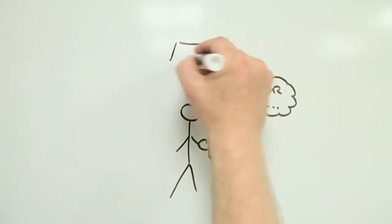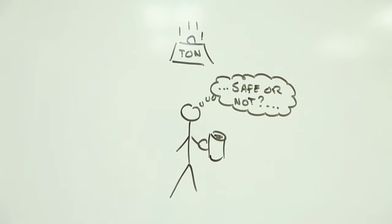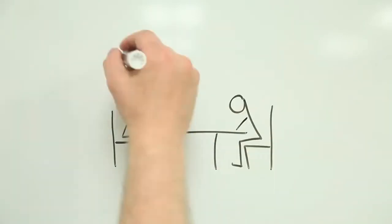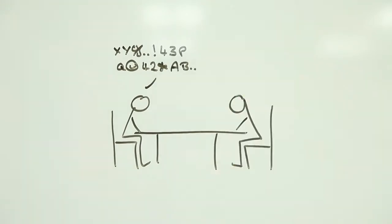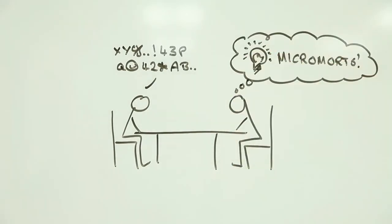How do you know how likely something is to kill you? In the 1970s, Stanford professor Ronald Howard came up with the Micromort as a rather neat way of putting a number on the chances of dying while engaged in some activity.